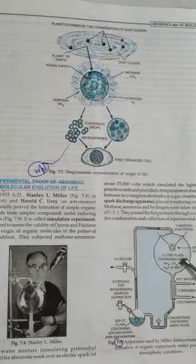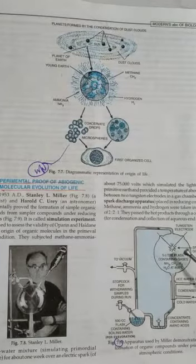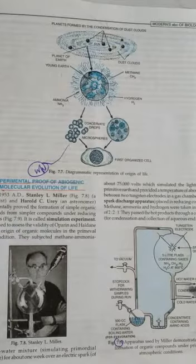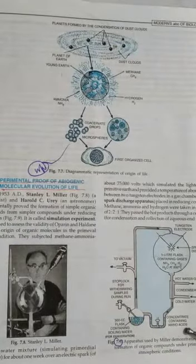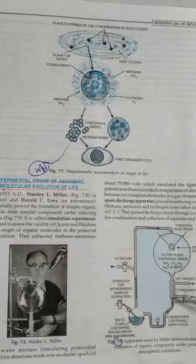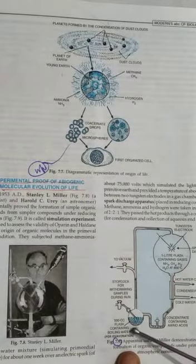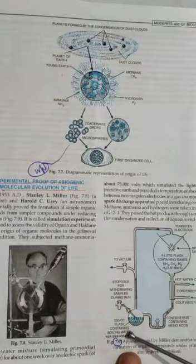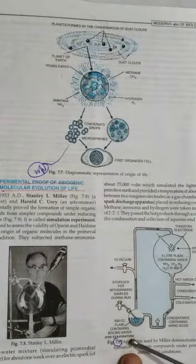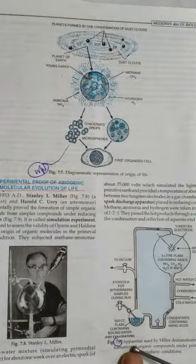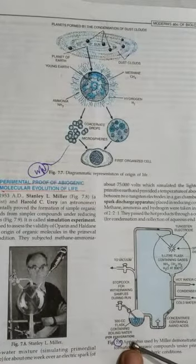These elements were changed with the electric spark into amino acids. The amino acids were transformed and collected at the base at 500 cc flask containing boiling water for evaporation.